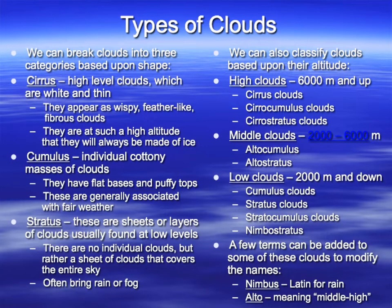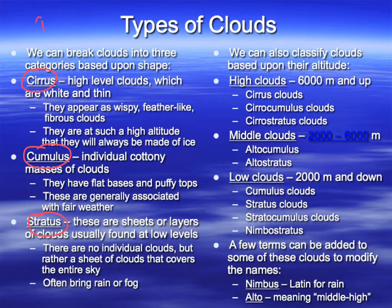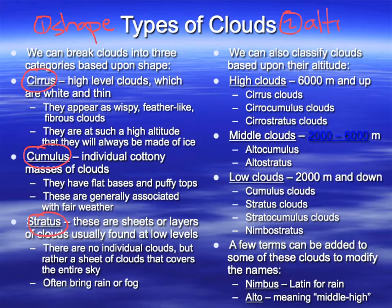Types of clouds: there are three types — cirrus, cumulus, and stratus. All clouds are broken up into different types based upon two categories. The first category is what they look like — their shape. The second characteristic is their altitude, their height above the surface.